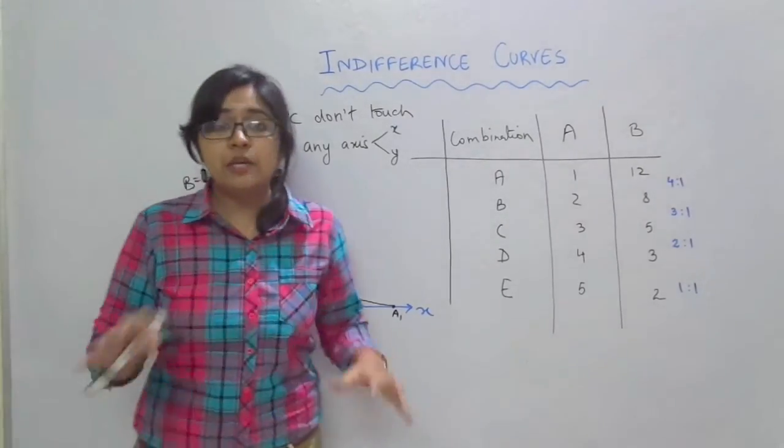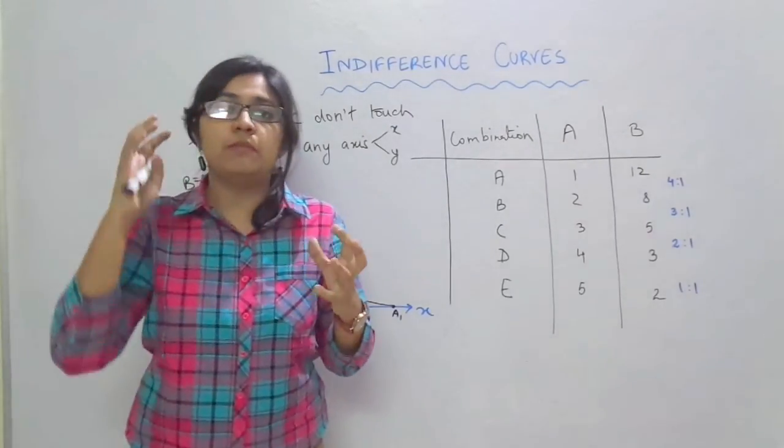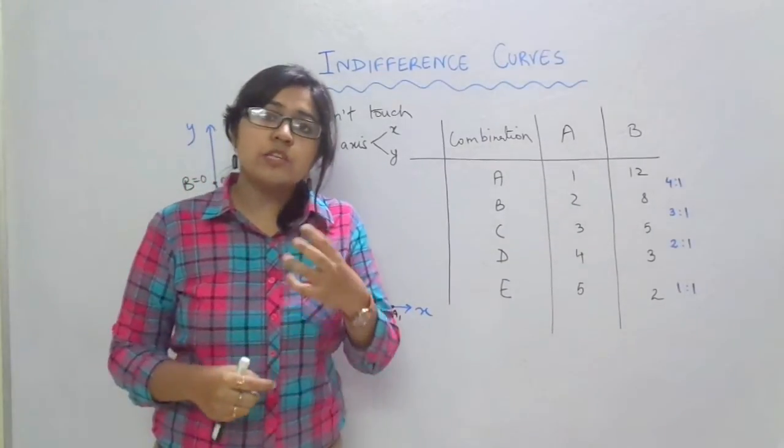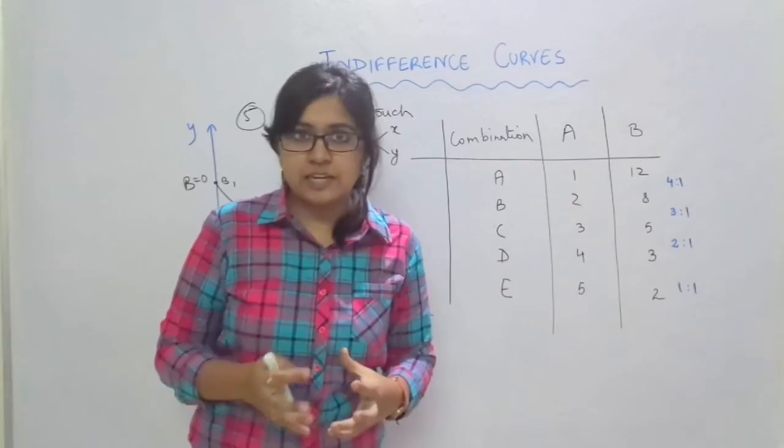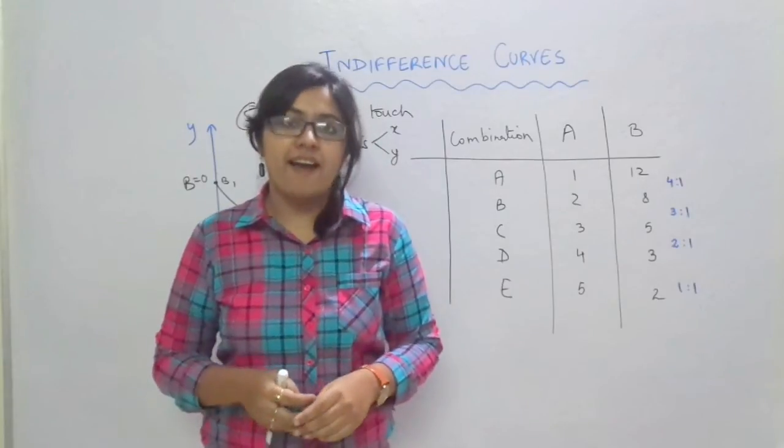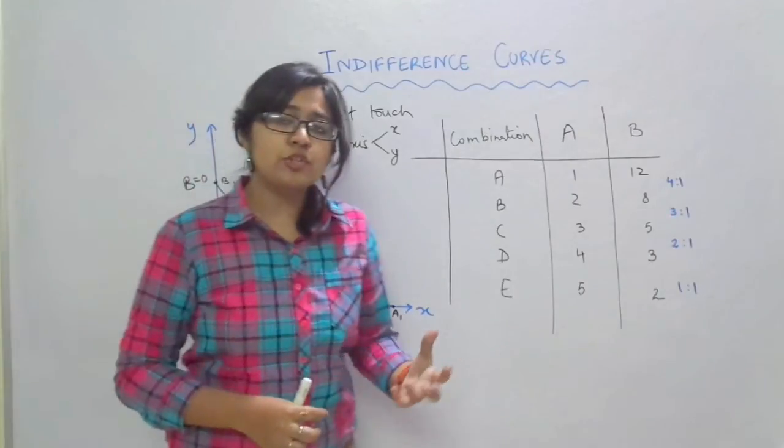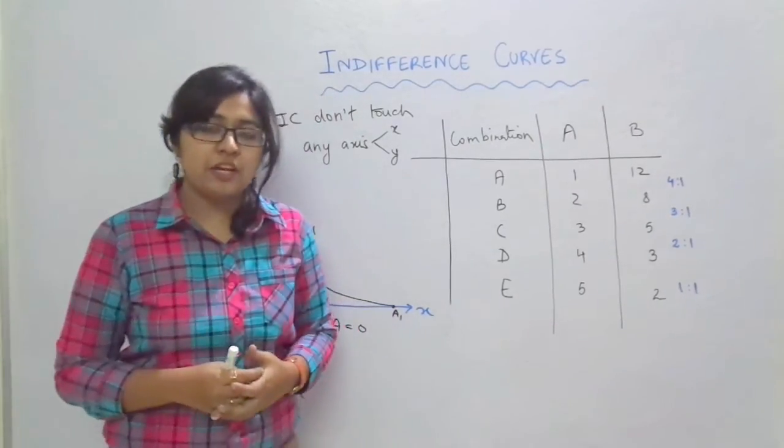So here we conclude with our session of indifference curve analysis which was basically an ordinal utility concept given by Hicks and Allen, and we have many more topics to go in the microeconomic theory so we will be meeting soon.